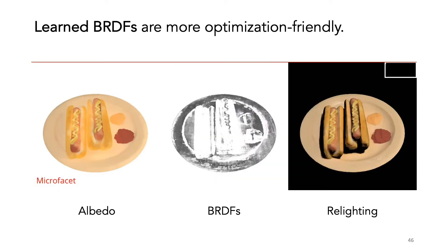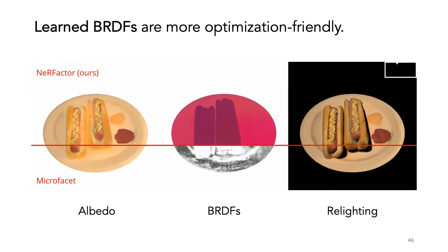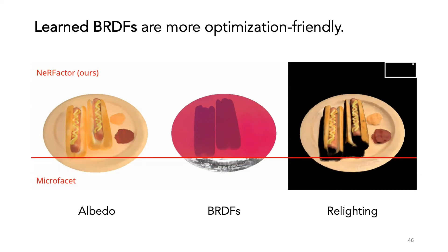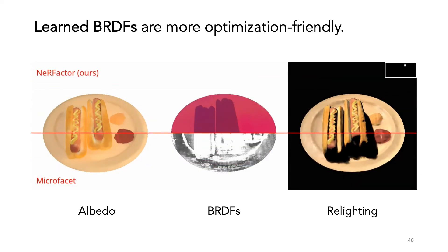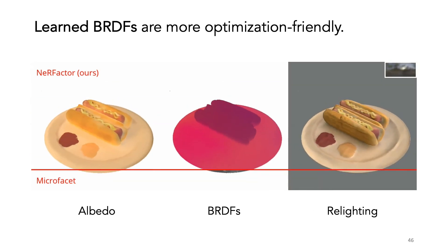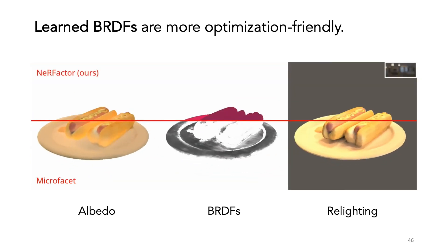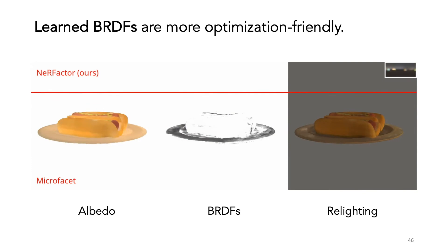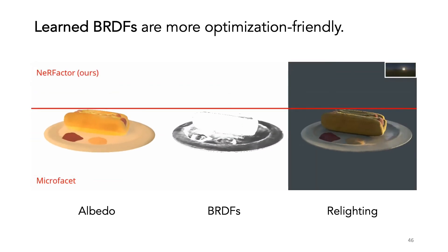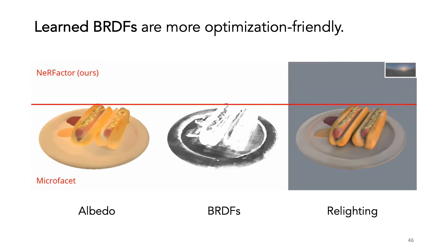We can also replace the learned BRDFs with microfacet BRDFs and have the MLP predict the roughness parameter. The rendering is lower quality with noisy specularities. Note that we had to remove the smoothness regularization for BRDFs here to avoid the local optimum of predicting maximum roughness everywhere, which is a safe bet for the L2 re-rendering loss.